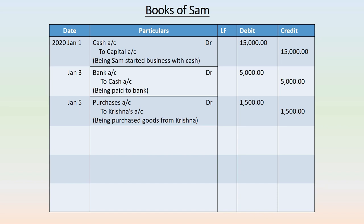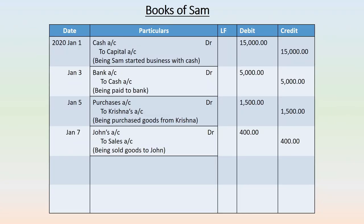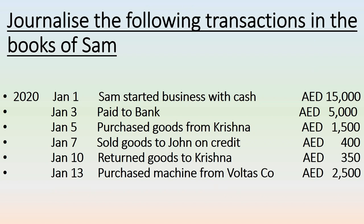Krishna's account is a personal account — Krishna is the giver, so it should be credited. Don't forget to write the narration. Next transaction, January 7th: sold goods to John on credit, 400 dirhams. The two accounts are John's account and sales account. John's account is a personal account — he is the receiver of the goods — so John's account is to be debited. Sales account is an income account; as per nominal account rules, income should be credited. Write down the narration.